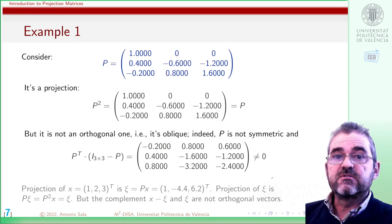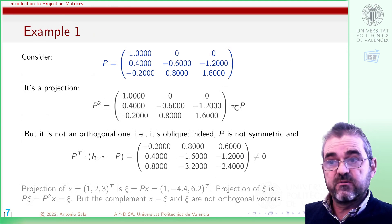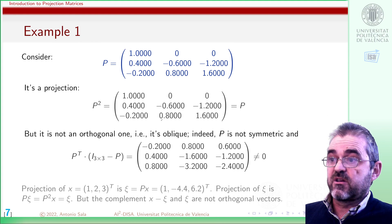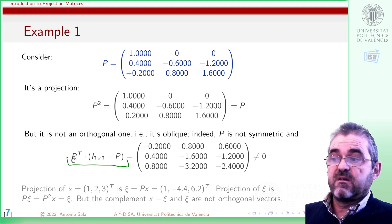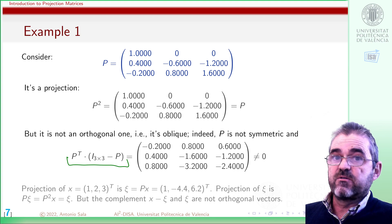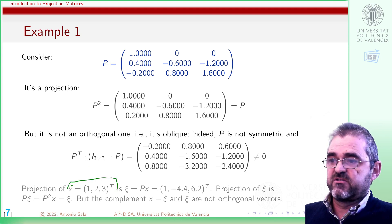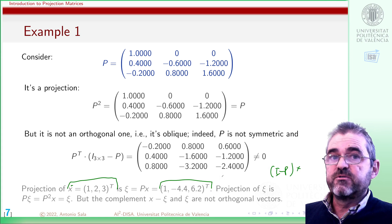Let us now discuss some examples. Consider matrix P: it is a projection because P squared equals P, but it is not an orthogonal one because it is not symmetric. Indeed, if you multiply P transposed by the complement projection you get a non-zero matrix, confirming it is not orthogonal. You can check that the projection of a given point is not orthogonal to its complement. I leave it for you to verify this in MATLAB or Octave.